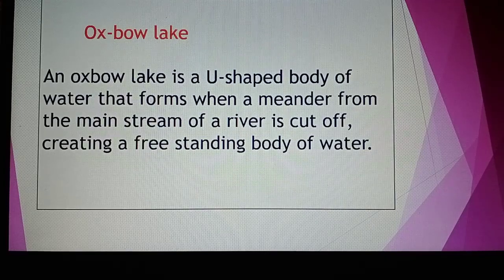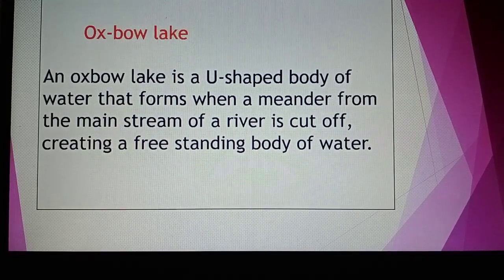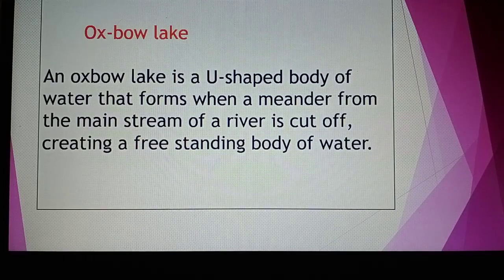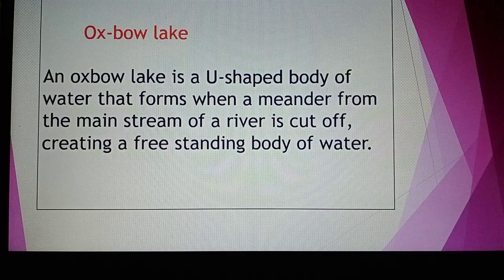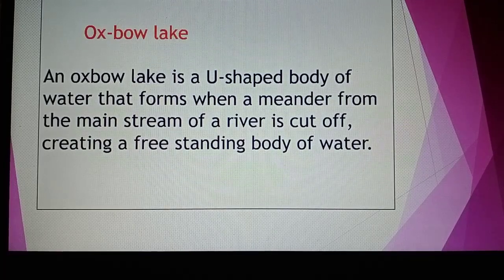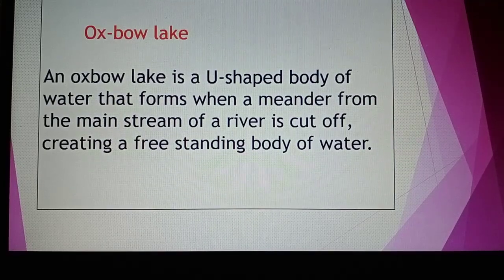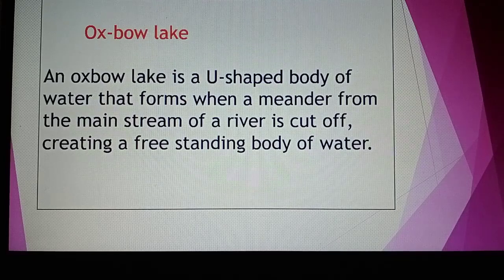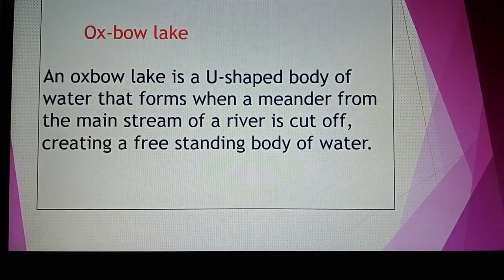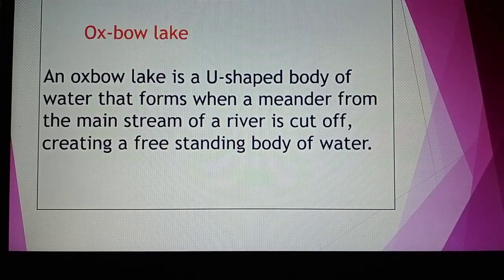As rivers travel from the upper course to the lower course crossing mountains, they develop bends called meanders. A stream separates from the main river and that separated part is called an oxbow lake — a free-standing body of water.